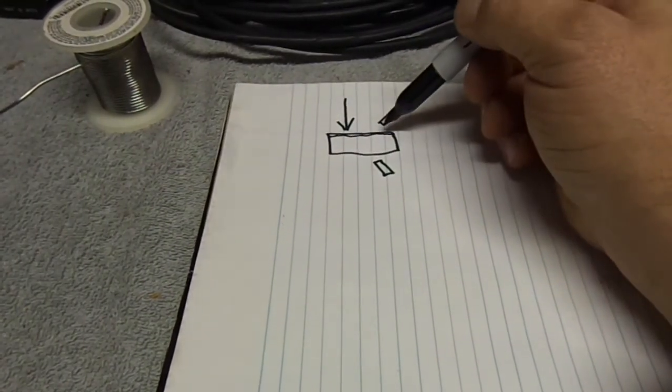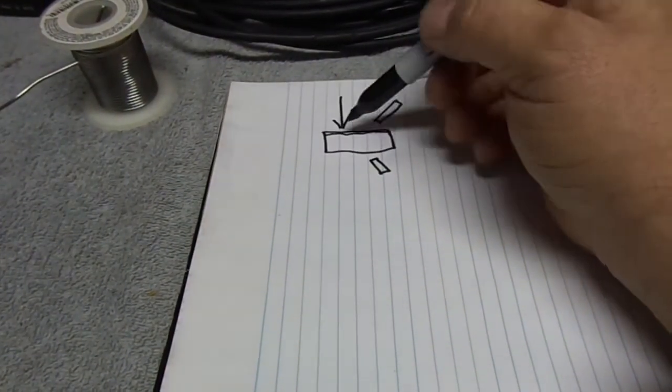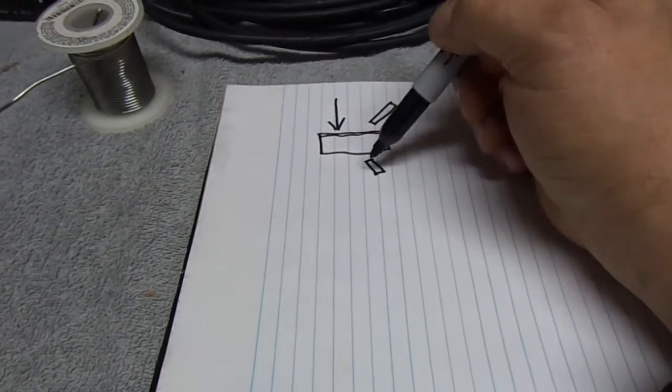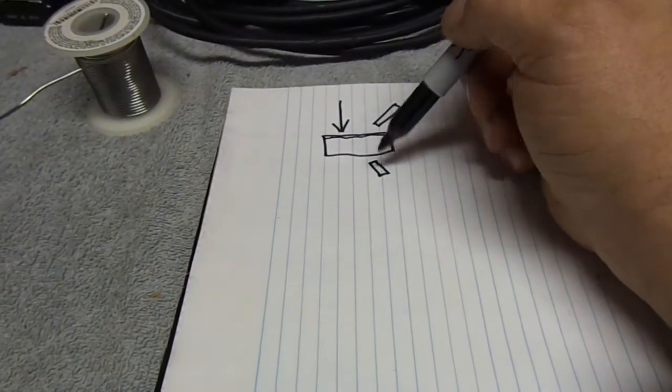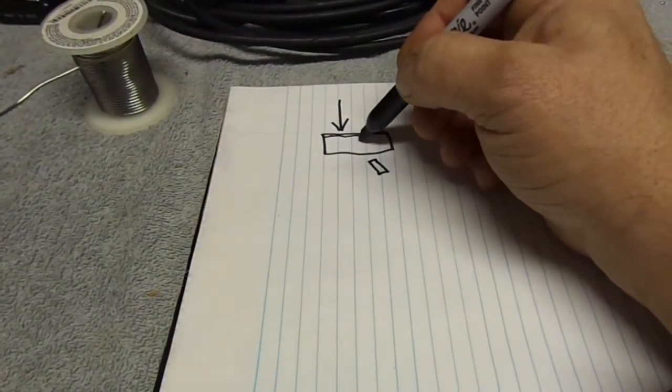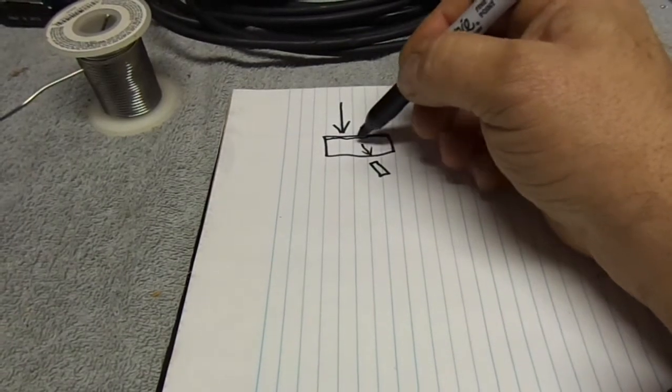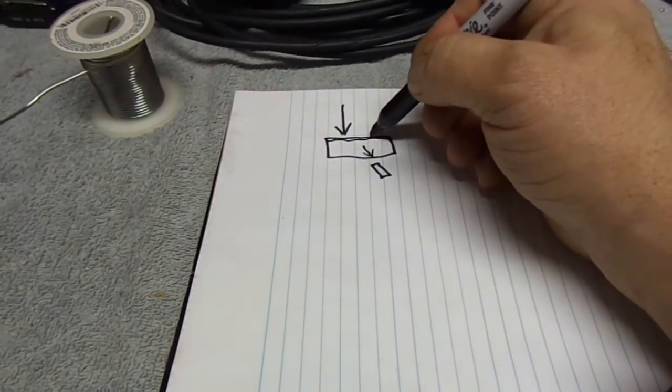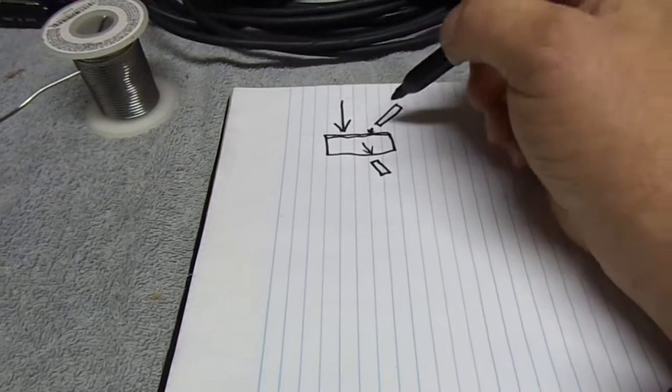So what happens is you strike the snare with your drumstick, and the first cycle goes this way. So what happens is the sound, or the wave, is going to go away from the microphone and towards one microphone. So you've got to imagine that this wave is going in here, and it's trying to go away from this mic. This is the theory.